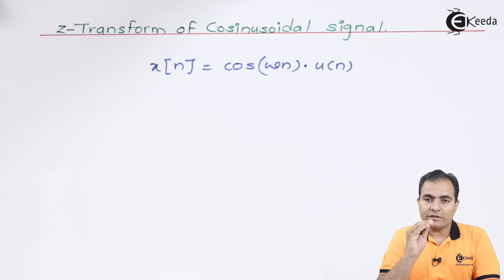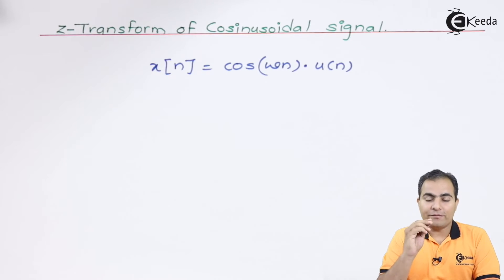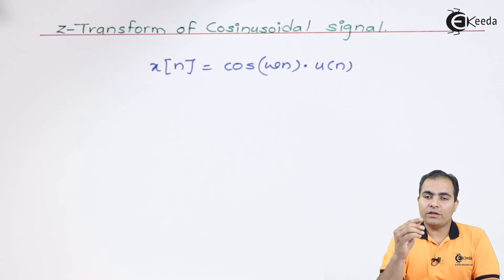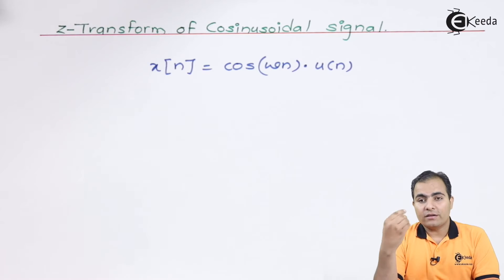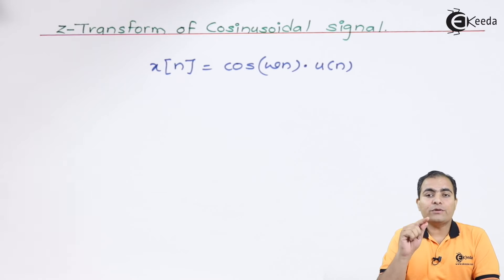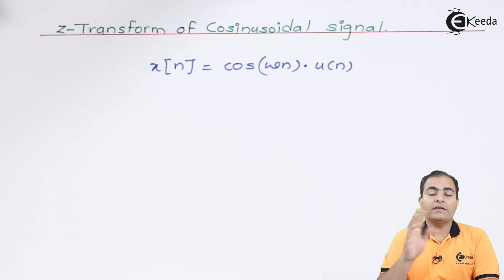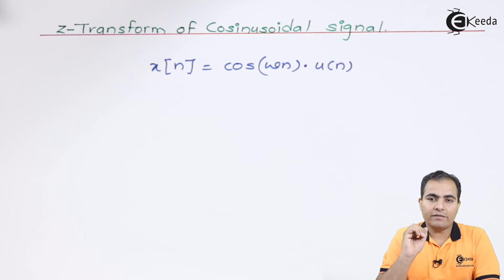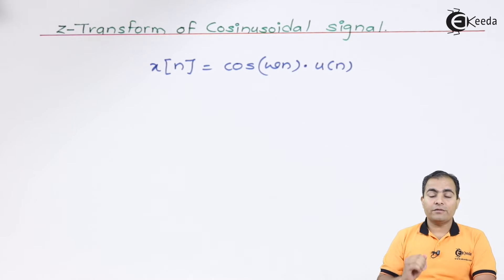This can be achieved by multiplying the unit step value. If you multiply the cosine wave by u(n), you will get the resultant on the right-hand side. If you multiply the cosine value by minus u(minus n) minus 1, you will get the left-hand sided value.